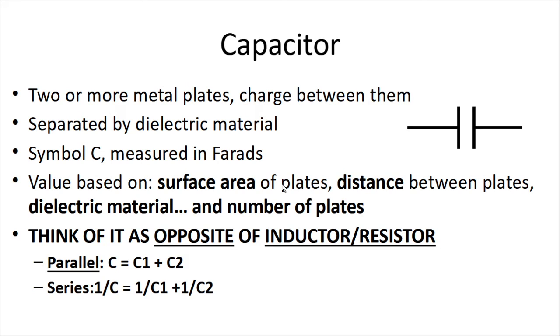Capacitor is two or more metal plates with a charge between them. They're also separated by a material that isolates the two plates. And that symbol is C, and it's measured in farads. Now, the value of the capacitor in farads is based on a bunch of factors, including the surface area of the plates, which means how big they are, the distance between the plates, the material between them, the dielectric, and the number of plates.